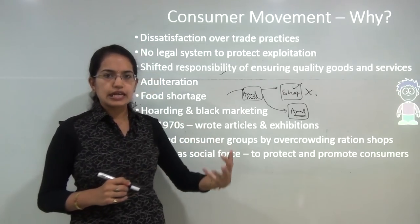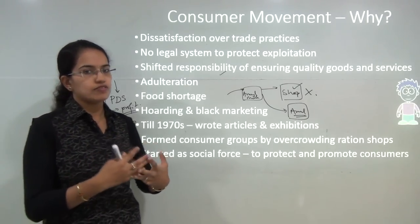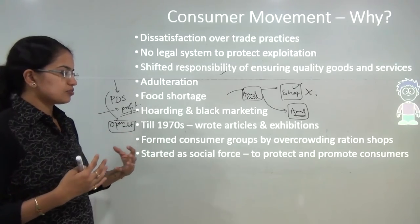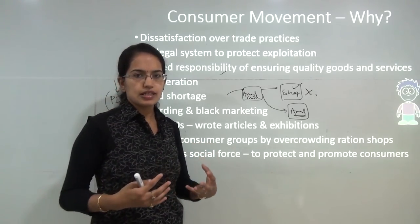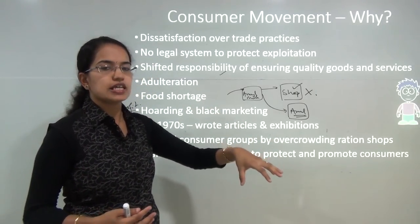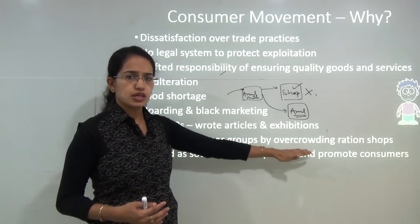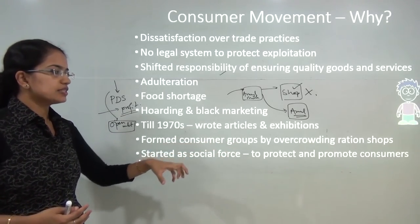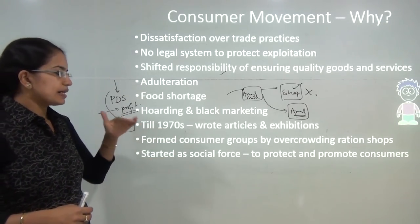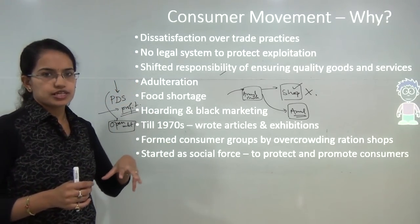Till the 1970s, the major ways of agitation were writing articles, holding exhibitions, and showing discontent in various forms. Later, consumer groups were formed. What they tried to do was overcrowd places — for example, overcrowding a ration shop providing PDS commodities through fair price shops, claiming malpractice was going on. But this is not how consumers should really act, and so a social movement came up to properly protect customers.